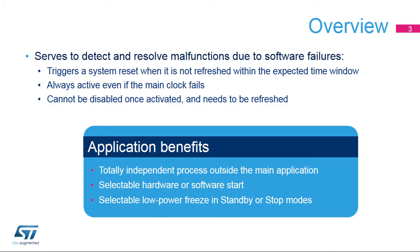The Independent Watchdog is used to detect and resolve malfunctions due to software failures. It triggers a reset sequence when it is not refreshed within the expected time window. Since its clock is an independent 32 kHz Low-Speed Internal RC Oscillator, or LSI, it remains active even if the main clock fails. Once enabled, it forces the activation of the Low-Speed Internal Oscillator, and it can only be disabled by a reset.